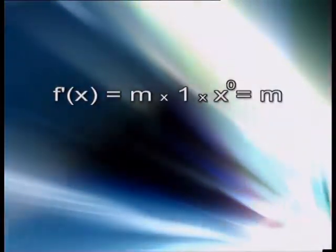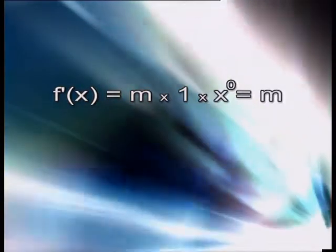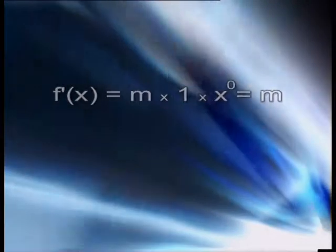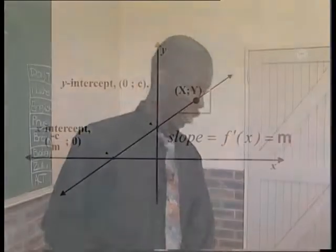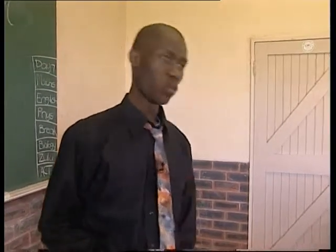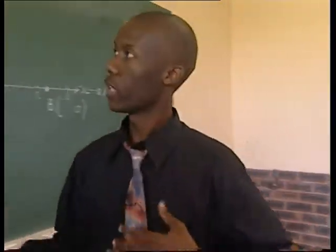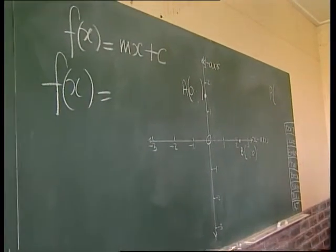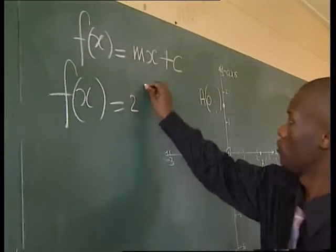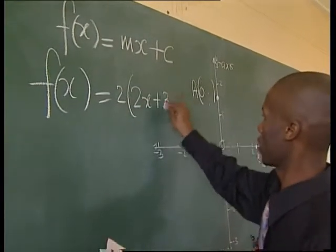When differentiating a linear function, you get f'(x) = m × 1 × x to the power of zero, which equals m. This implies that the slope is constant and therefore that the line is straight. On a graph like this, there are no turning points and no minimum or maximum points. So now let's look at activity 1.1a and the function f(x) = 2(2x + 3).